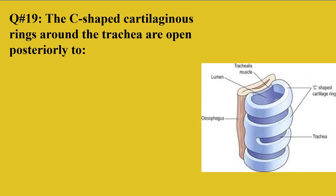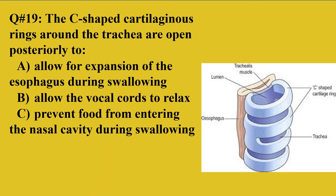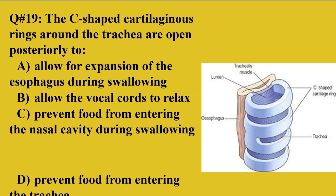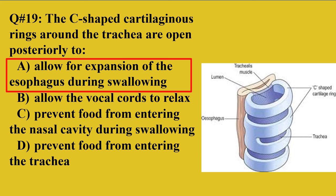Question number 19: The C-shaped cartilaginous rings around the trachea are opened posteriorly to — A: allow for expansion of the esophagus during swallowing, B: allow the vocal cords to relax, C: prevent food from entering the nasal cavity during swallowing, D: prevent food from entering the trachea. The right option is A. The rings are C-shaped — not complete — because the esophagus is positioned there. When food passes through the esophagus via peristalsis, the flexible opening allows expansion, facilitating the passage of food.